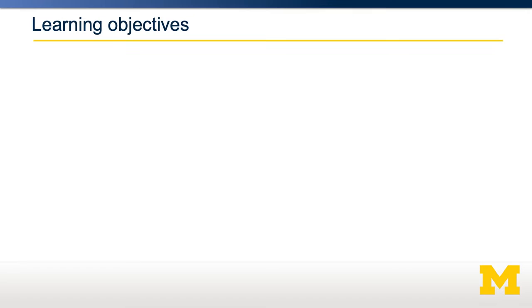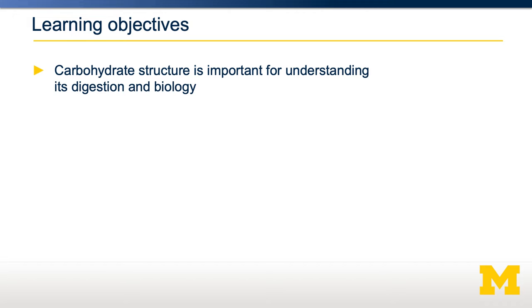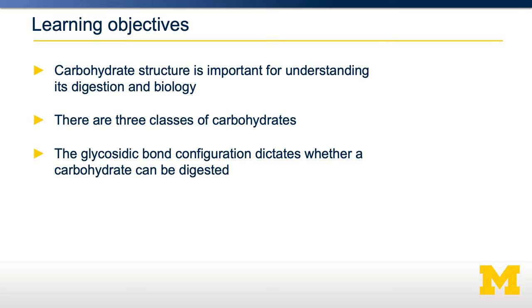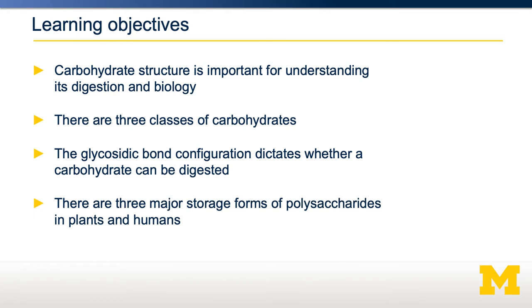Carbohydrates come in different structures, different monosaccharides, and different connections between those monosaccharides. In this unit, we'll talk about carbohydrate structure and why that's so important for understanding the digestion, absorption, and metabolism of carbohydrates. We're going to talk about the three classifications of carbohydrates, the configuration of the glycosidic bond, and the major storage forms of polysaccharides and how their structural differences explain differences in their nutritional biology.